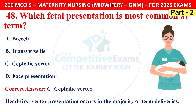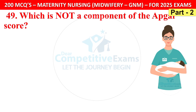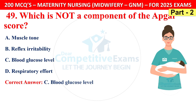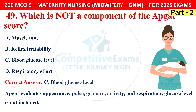Question 49: Which is not a component of the Apgar score? Options are muscle tone, irritability, blood glucose level, or respiratory effort. The correct answer is C — blood glucose level. Apgar evaluates Appearance, Pulse, Grimace, Activity, and Respiration. Glucose level is not included.